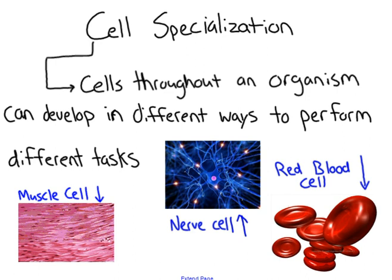Muscle cells are used to move, lift, and pull things — they're great for carrying out movement and kinetics. Nerve cells communicate between the rest of your body and your brain. Red blood cells deliver oxygen throughout your body. All of these different cells are designed specifically to perform a specific task — that is cell specialization, and it is only seen in eukaryotic cells.